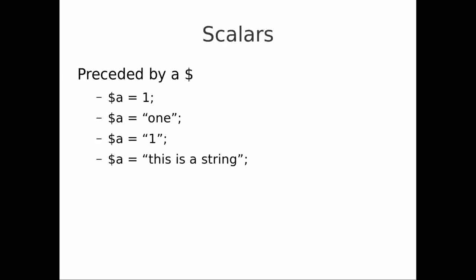Here I've defined the same variable four times. In the first instance, $a is equal to 1 — that defines it as a number, an int perhaps. In the second line, $a is equal to the word 'one' — that defines $a as a string. I don't have to declare that it's a string or an int. And in the third line, $a is equal to '1' in quotes — this is a string, but Perl tries to do the right thing. I can actually convert this string to a number just by using it in a context where a number should appear.